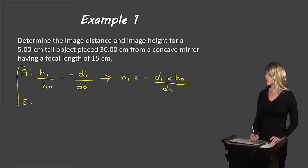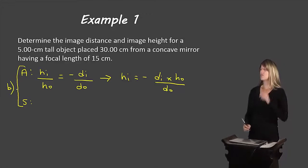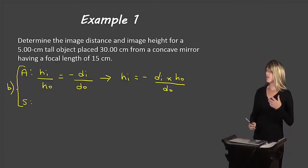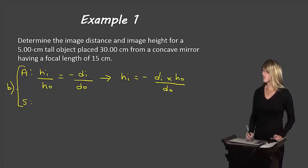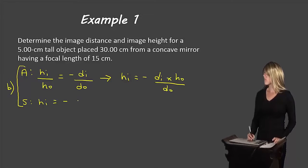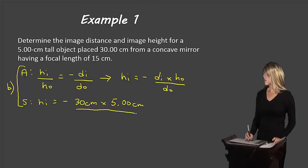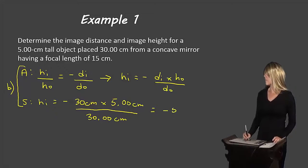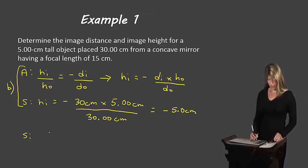We can use this equation now because we solved for DI, and we already had DO and HO. Substituting and solving: HI = (−30 cm × 5.00 cm) / 30.00 cm, which gives us negative 5.0 centimeters — again, two significant digits.